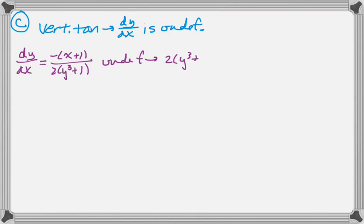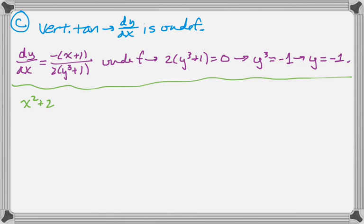We need 2 times the quantity y cubed plus 1 to equal 0, which means y cubed equals negative 1, so y equals negative 1. Next we'll take y equals negative 1 and substitute it into the original curve.